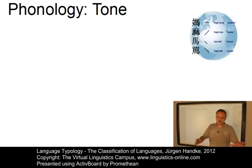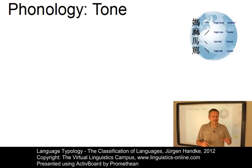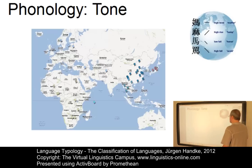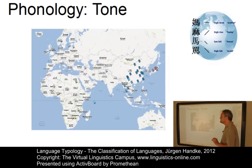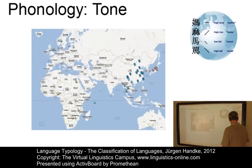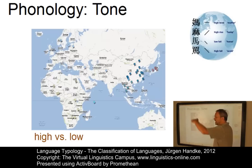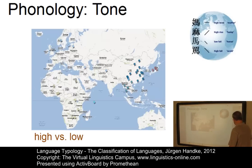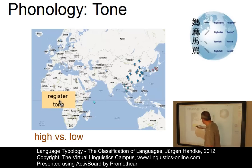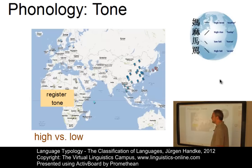Pitch variations that affect the meaning of a word are called tones, and a language that uses this technique is referred to as a tone language. The simplest kind uses two possible tones — high and low — and such languages are called register tone languages. They can be found primarily in Africa, for example within the Bantu languages.